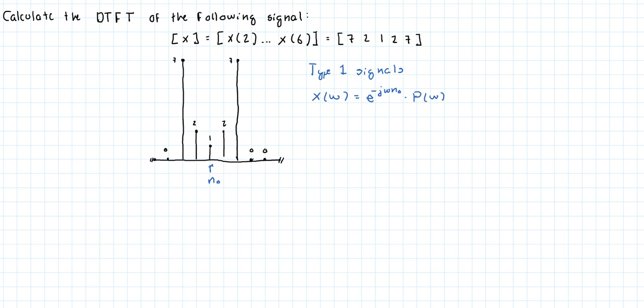I'm gonna write the DTFT formula here just as a reminder. Summation from n goes from minus infinity to positive infinity, x of n, e to the minus j omega n.